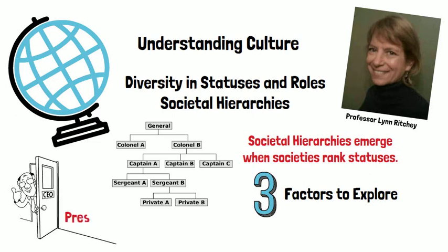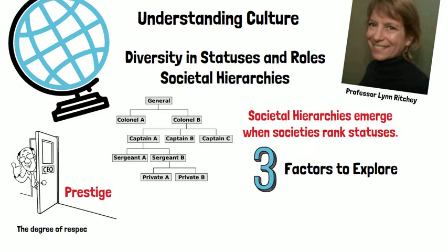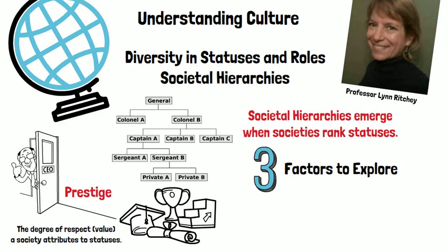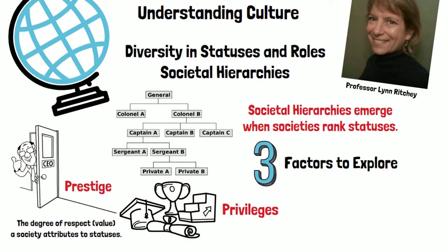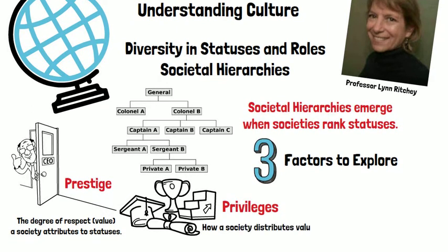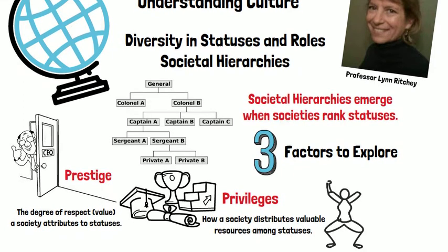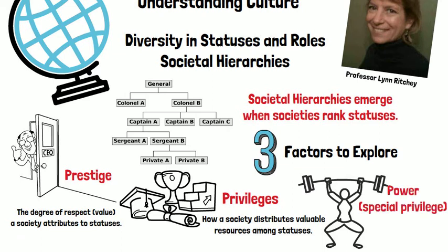First, prestige — the degree of respect or value a society attributes to a status. Second, privileges — how a society distributes valuable resources among statuses. And third, power — considered a special privilege — which is the ability to influence the behavior of others against their will.